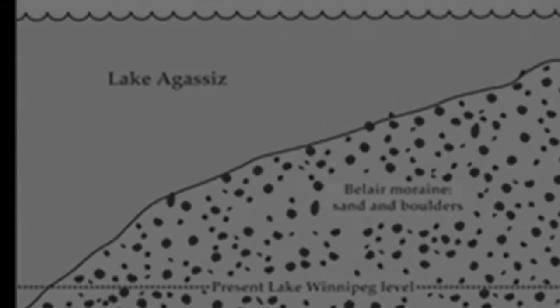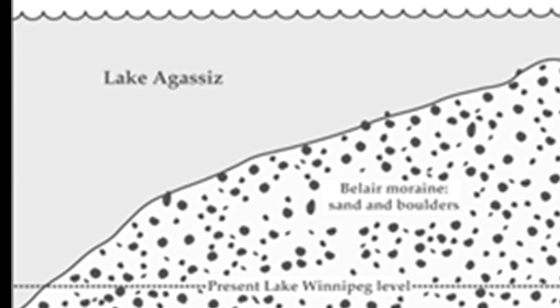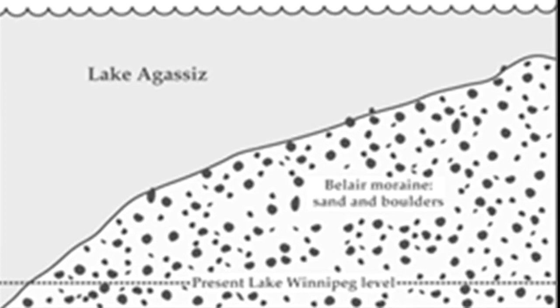This location was called Bel Air Moraine, a hill-shaped landform deposited here by glacial activity. The melting of the glacier that covered a large portion of Manitoba created a lake that covered much of the province. Geologist Warren Upham dubbed it Lake Agassiz after American scientist Louis Agassiz in 1879.